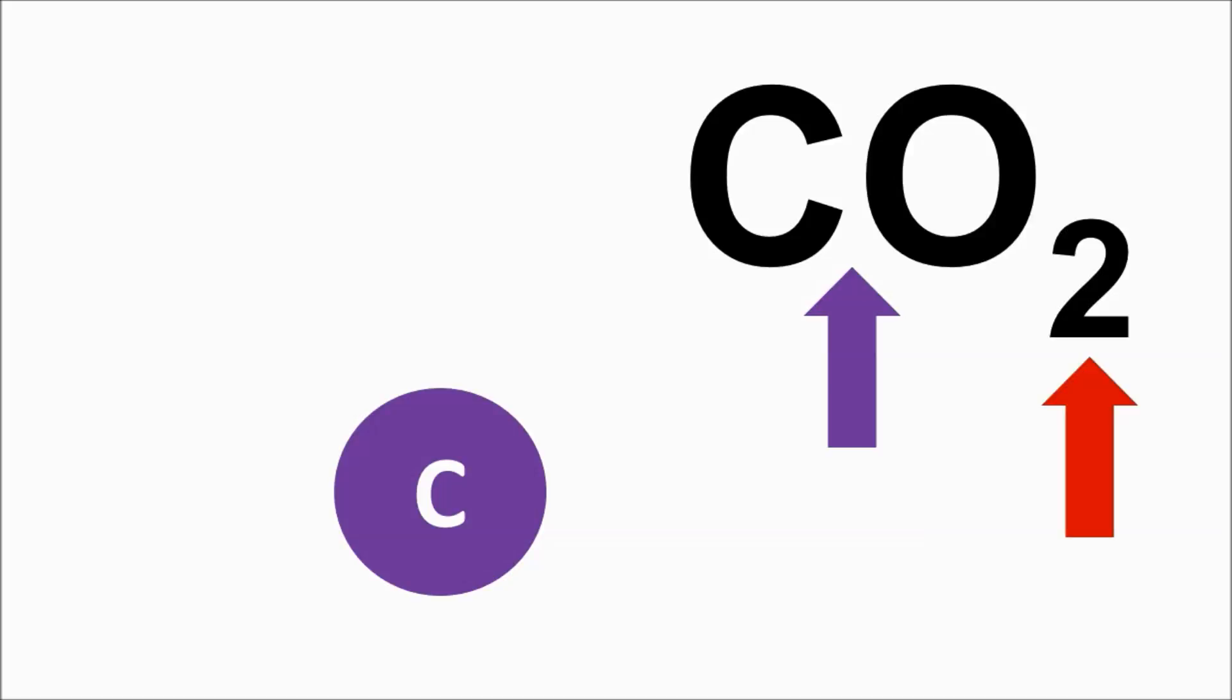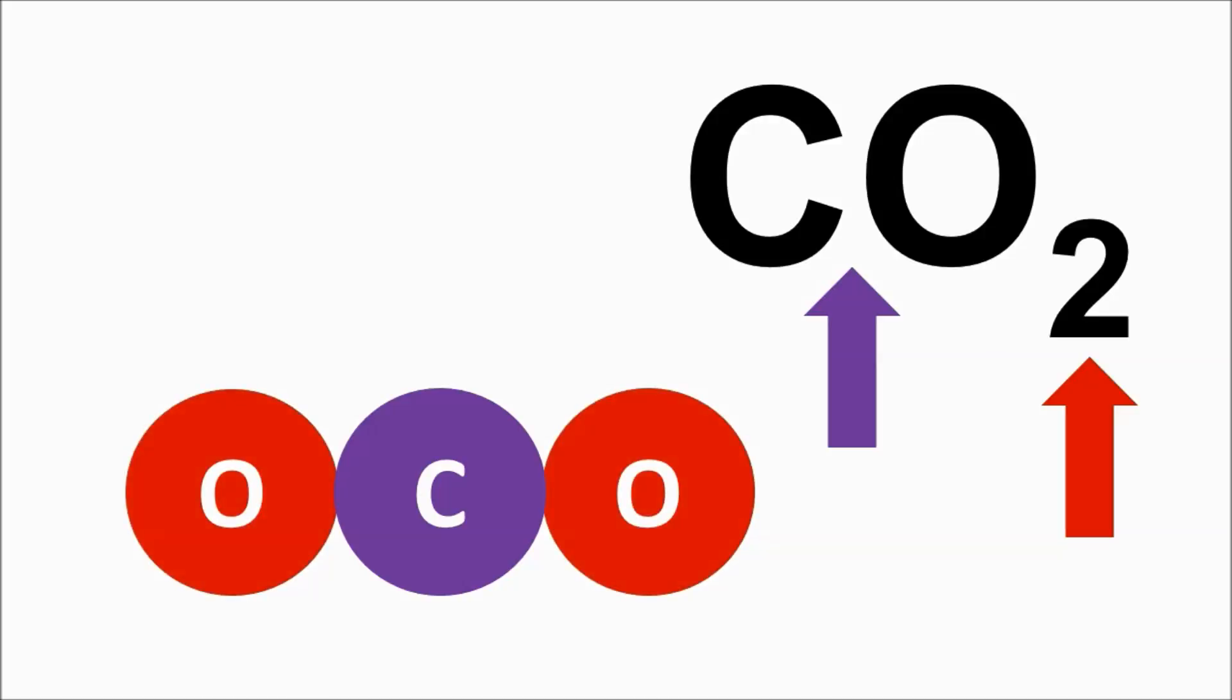Let's take a look at another formula for a substance you're breathing out right now. Carbon dioxide. Its chemical formula is CO2. Because there's no subscript behind the symbol C, we know that there's only one atom of carbon. The two subscript behind the symbol O tells us that there are two atoms of oxygen.